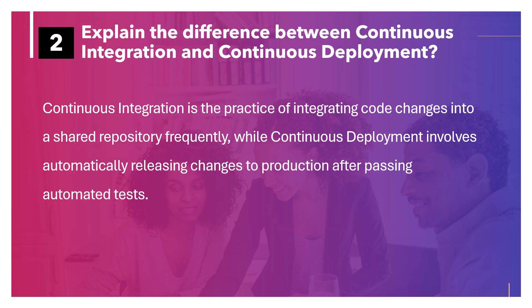Explain the difference between continuous integration and continuous deployment. Continuous integration is the practice of integrating code changes into a shared repository frequently, while continuous deployment involves automatically releasing changes to production after passing automated tests.